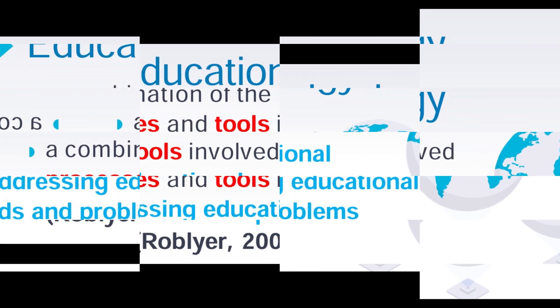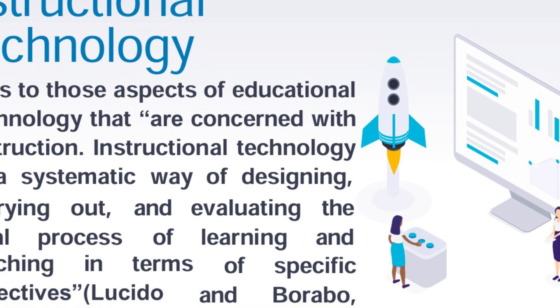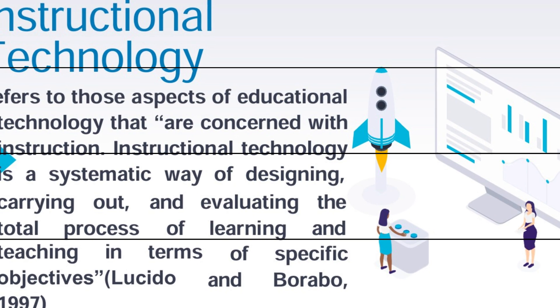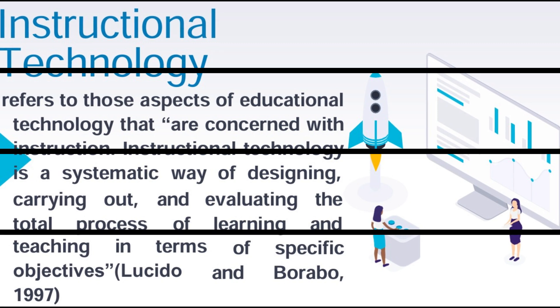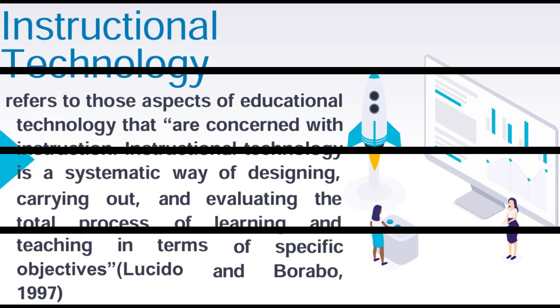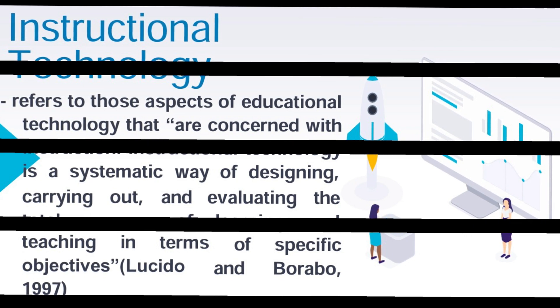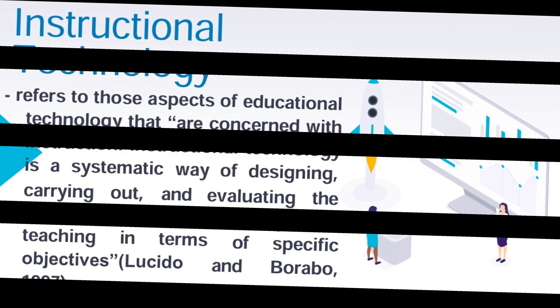Instructional technology specifically refers to the aspects of educational technology that focus on the actual teaching process. It is the systematic use of technology to design, implement, and evaluate learning activities and content that achieve specific learning objectives. Instructional technology is not limited to just delivering content — it also involves designing the environment in which learning takes place, including the development of appropriate strategies, materials, and assessments. The aim is to maximize the effectiveness of teaching by considering the needs of learners and ensuring that the instructional tools and methods are aligned with learning goals. Lucido (1997) defines it as the process of systematically designing, carrying out, and evaluating instructional activities to meet educational objectives.